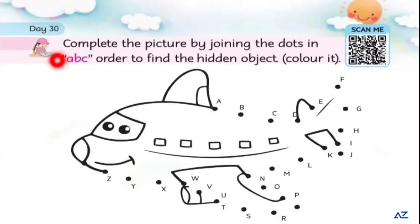There is a first question: complete the picture by joining the dots in ABC order to find the hidden object. Color it.